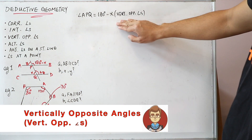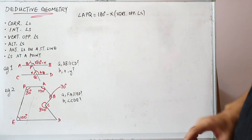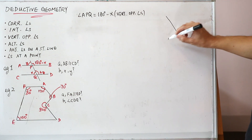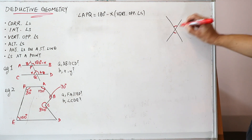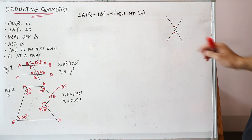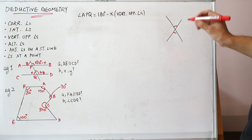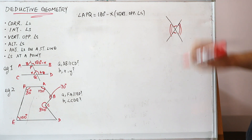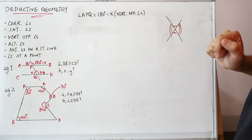For those who don't know what vertically opposite angles is, I'll quickly show you. Assuming you have two lines crossing like this, this angle and this angle are the same because they are vertically opposite angles. Similarly, the other pair of opposite angles are also equal.